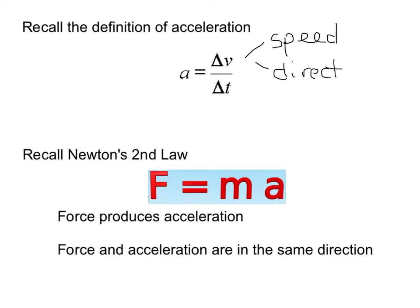Thus, if the speed changes you're accelerating, or if your direction changes you're also accelerating. Let's also recall Newton's second law: force equals mass times acceleration. This tells us that force produces acceleration, and that force and acceleration are in the same direction — both are vectors. So if we know we're accelerating, we can also determine the direction of the force.